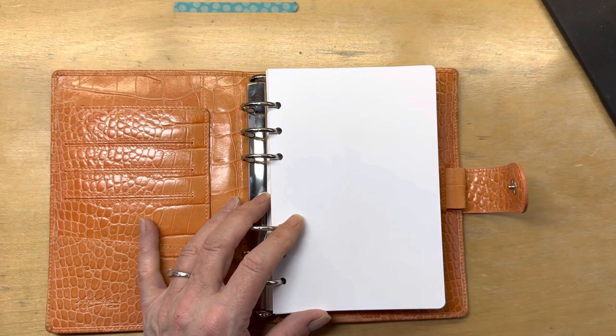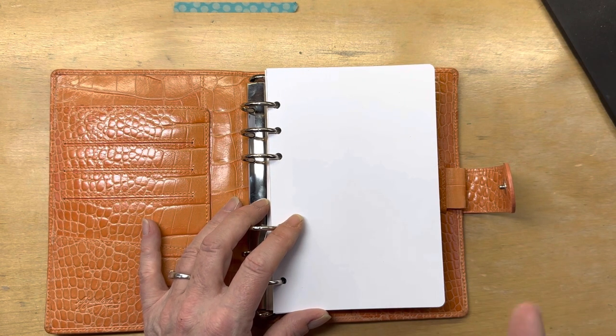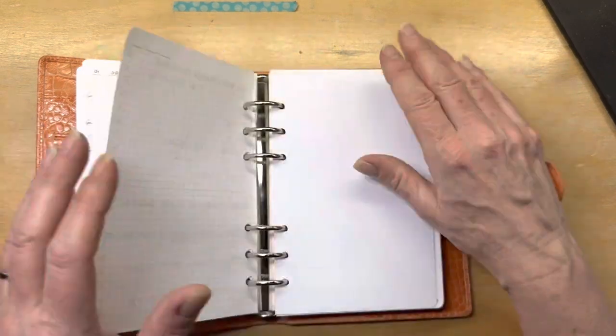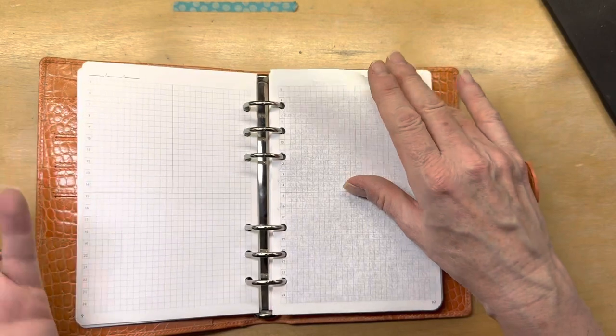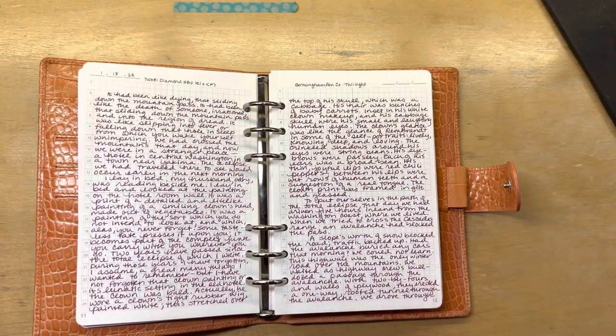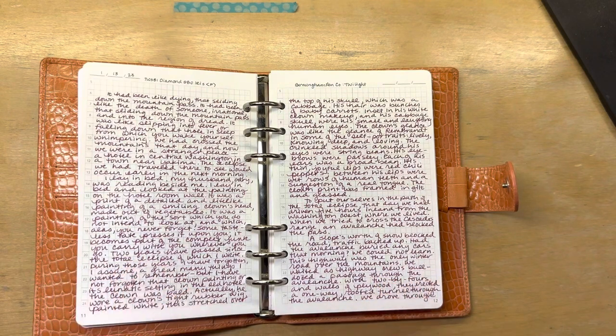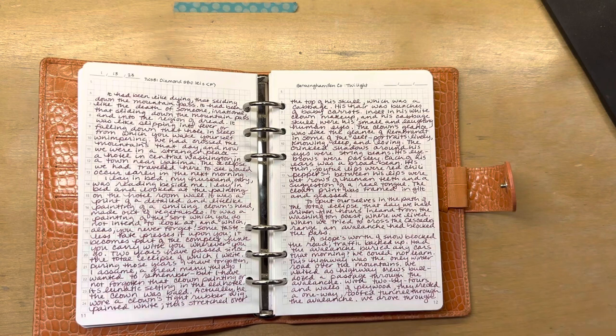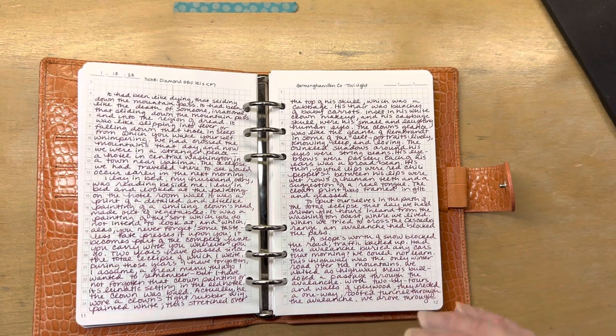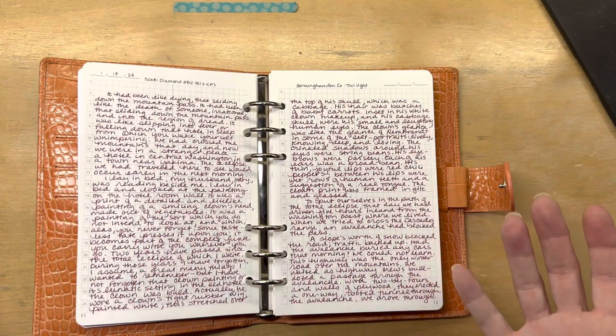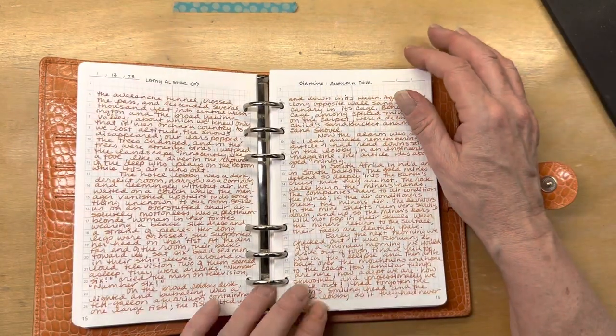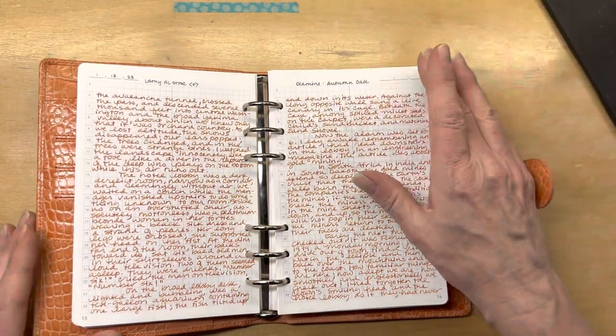So again, ring binders seemed like the best place to do this. Although this one, I say likely could be very successful in a bound book. I didn't want to use a bound book for this because I would rather use my bound books for something else. So what I did is I began copying short stories. I chose short stories and I began copying a short story longhand so that I could get a look at what Birmingham Pen Company Twilight looked like with a TWSBI diamond 580. I think that this is a ridiculous and insane amount of work to do this for every ink in every pen size that I own.